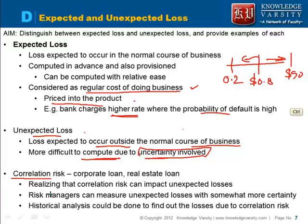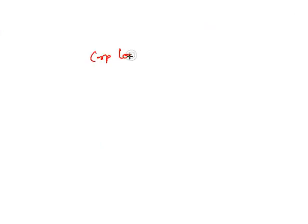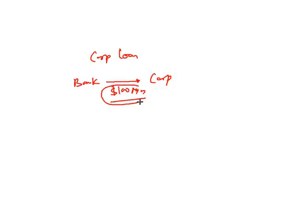Correlation risk is a key factor in unexpected losses. This can be seen in corporate loans or real estate loans. For example, a bank lends $100 million to a corporate entity, and the corporate expects business to be good and plans to repay the money.